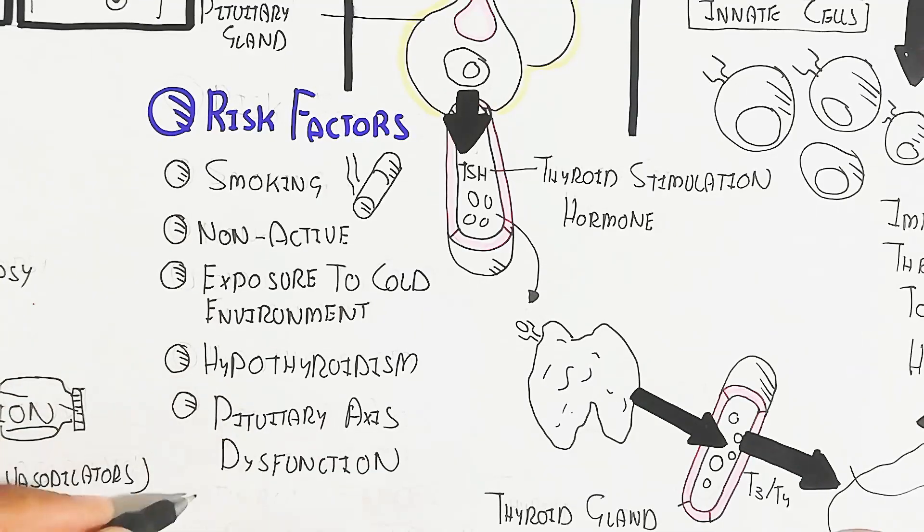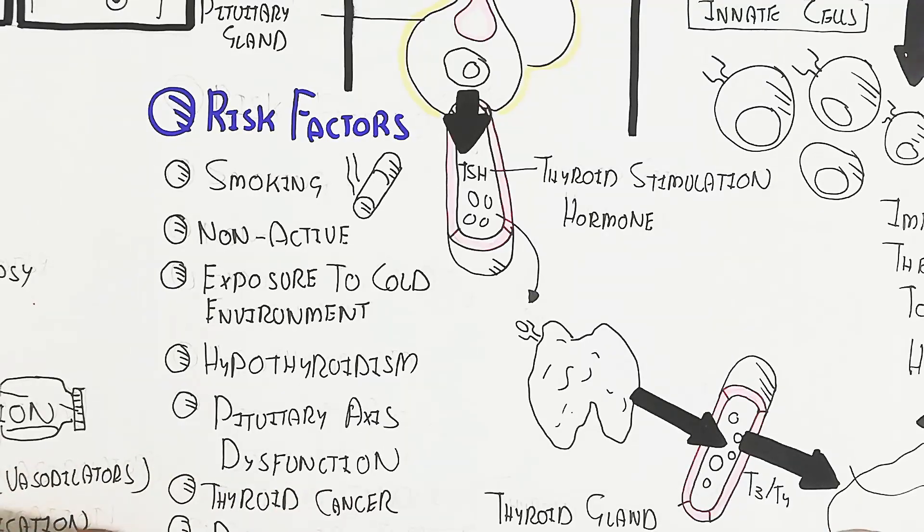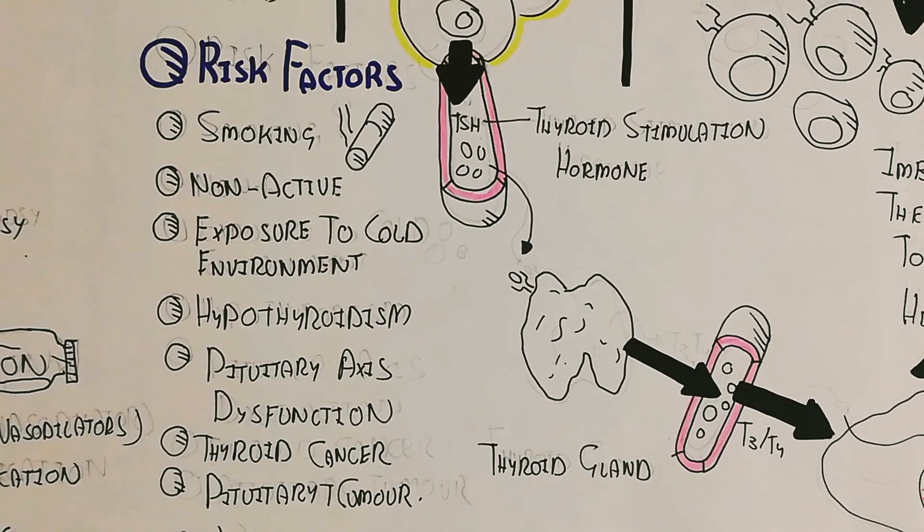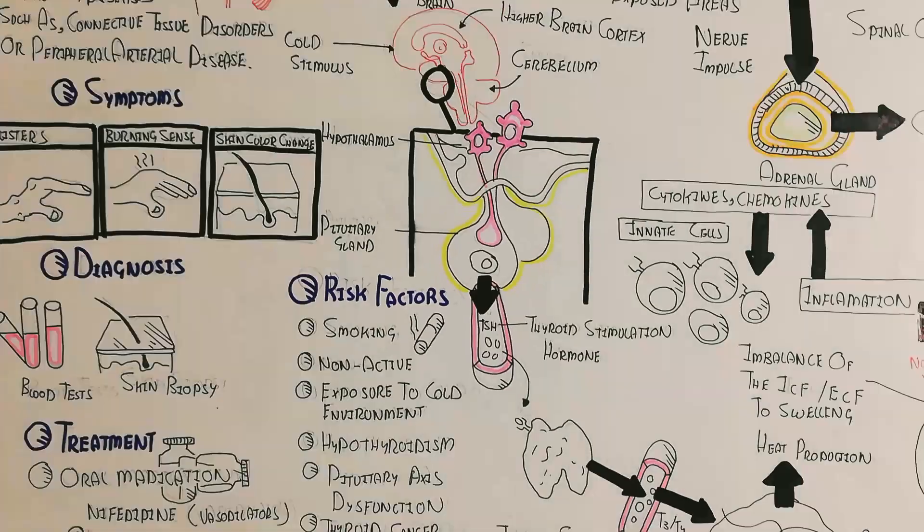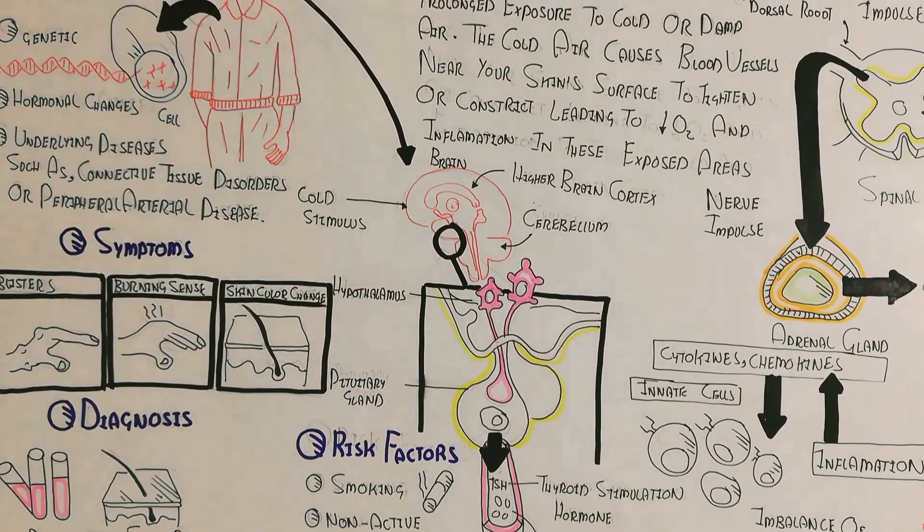And exposure to cold environment, hypothyroidism is also involved, pituitary axis dysfunction, thyroid cancer, as well as pituitary tumor formation, which will lead to Chilblain also. But the genetic cause is the major, remember that thing.